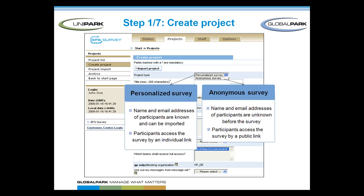First, you create a new project indicating the project type, the title, and the author of the survey. In terms of the project type, you could choose between an anonymous and a personalized survey. In case you know all the names and email addresses of your survey participants, set up a personalized survey so each participant gets their own personal invitation via email. Otherwise, you select an anonymous survey, generating one public link to the survey for each participant.